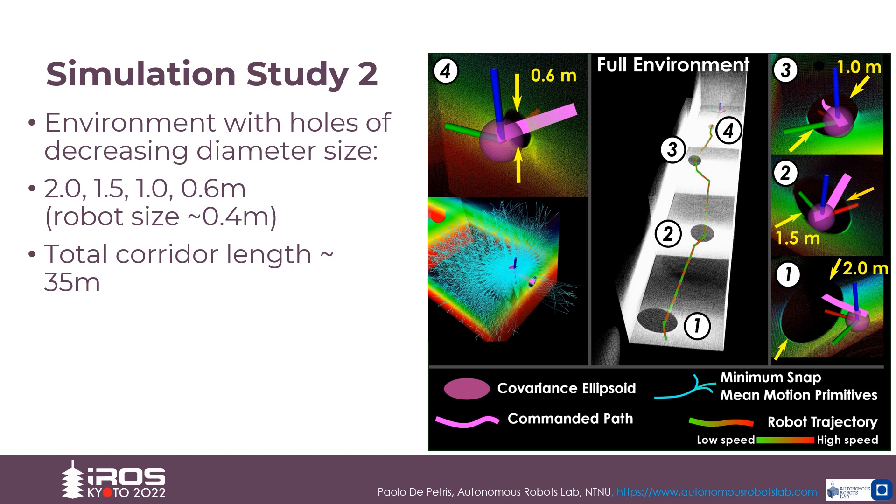Due to the size of the robot and having introduced uncertainty in the localization, the planner must choose a path such that at least one of the uncertain primitives, or the mean primitive, is in collision within the allowed limits. As depicted in this slide, the method can successfully plan through all four openings.